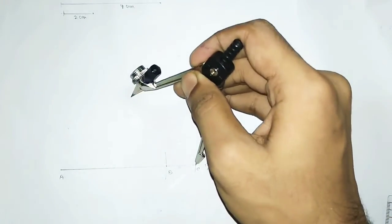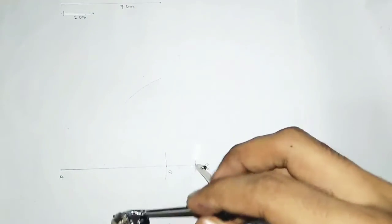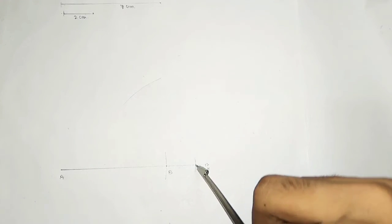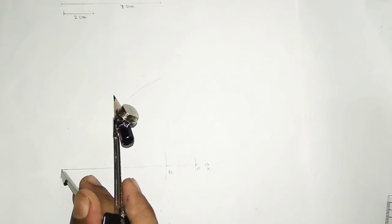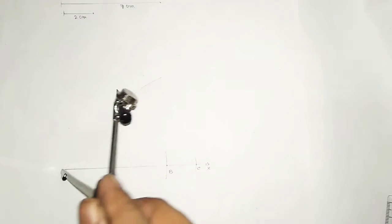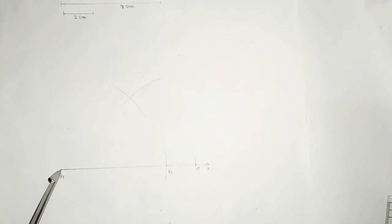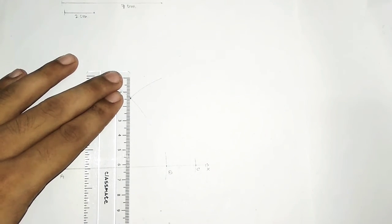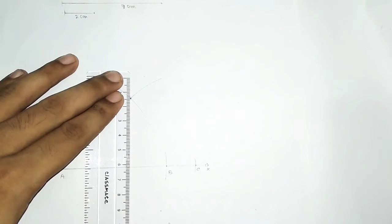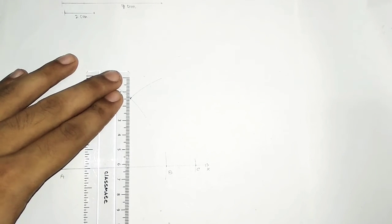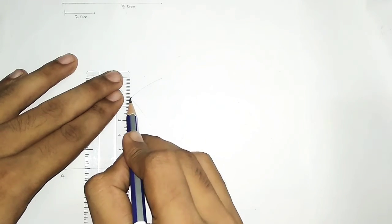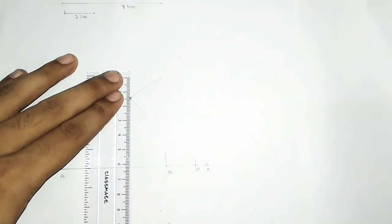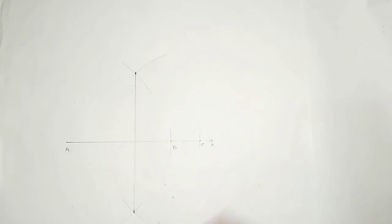Draw one arc on the upper direction and one on the lower direction. Without changing the compass, put it on the other end and repeat the same procedure. You will now get two intersection points. Join these two points carefully — this gives the perpendicular bisector of AC.